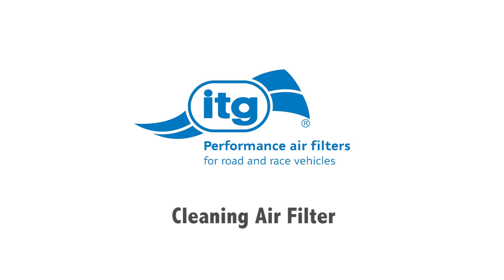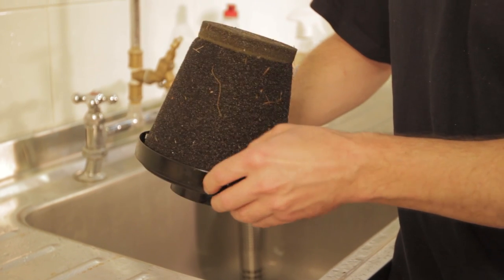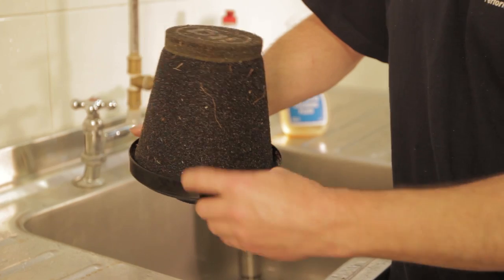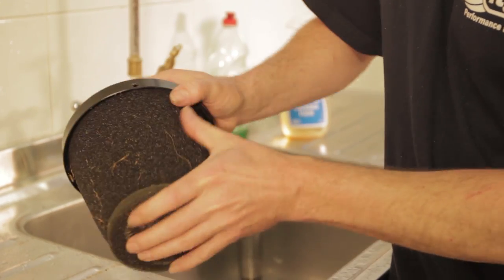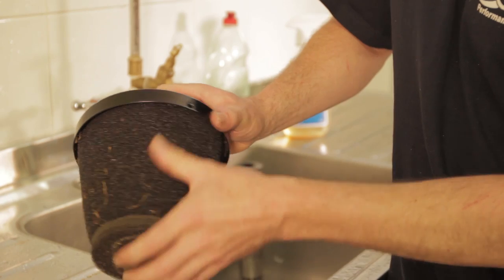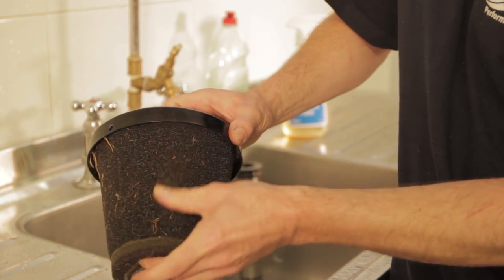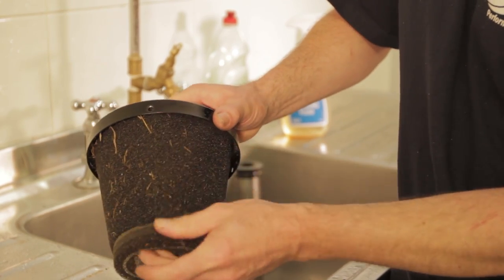Right then, here we have a dirty filter. So the first step is to clear out all this excess debris. Just get in with your fingers, and if you just rub your thumb across the surface, that will help to take away the very worst of the debris as well.